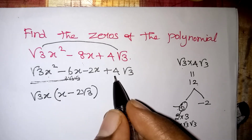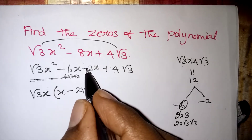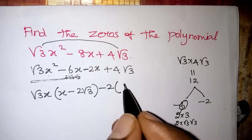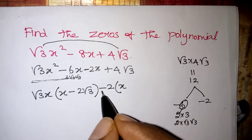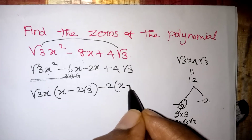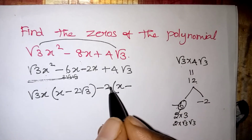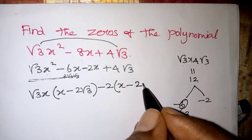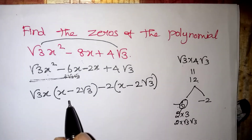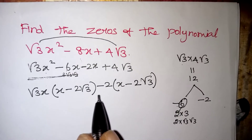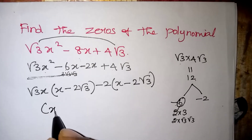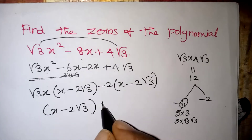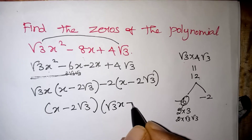Looking at the last two terms: 2 is common, and we have a minus sign, so take minus 2 outside. The remaining is x, and since we took the minus sign out, the plus becomes minus. From the 4 we took 2 outside, leaving 2·root 3 inside. So we get (x - 2·root 3) as a common factor in both groups.